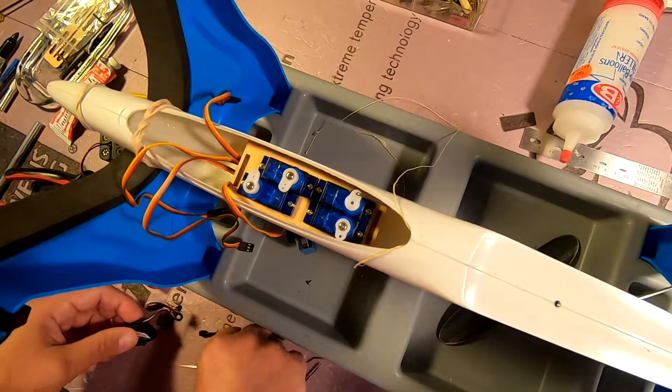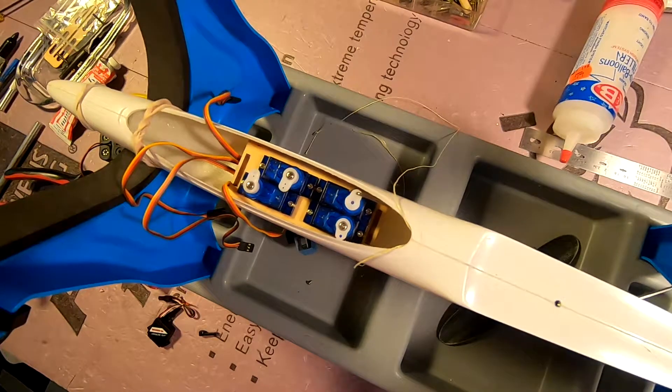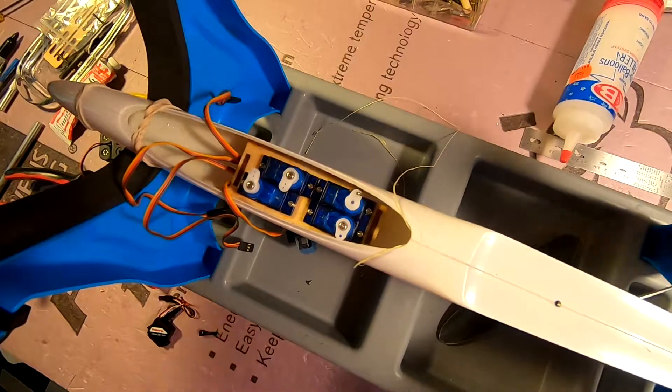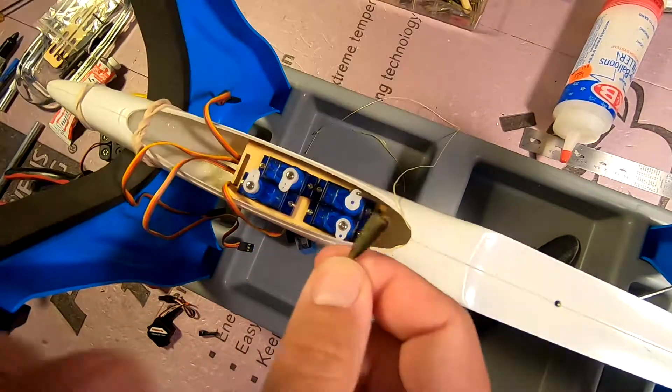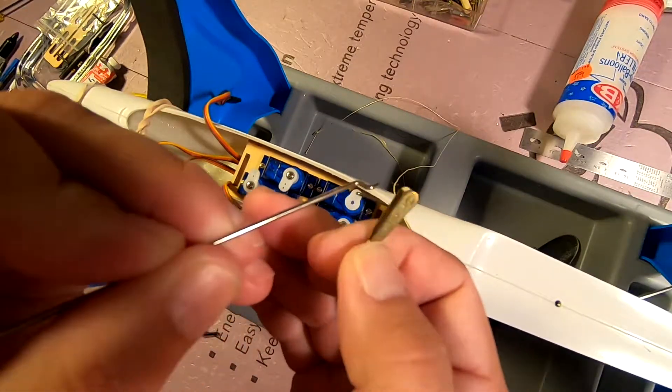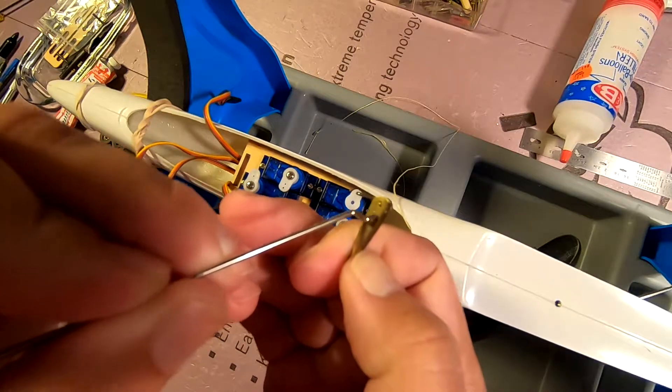Yet another option is to take an aftermarket clevis such as these and cut away some of the material - basically on the bottom one where it's going to contact, you kind of make a little half-moon cut there.